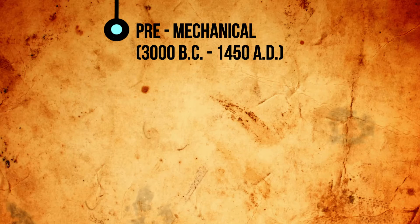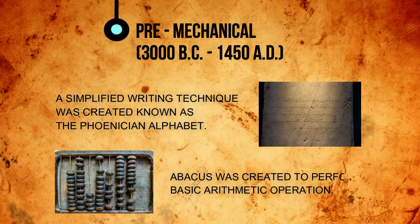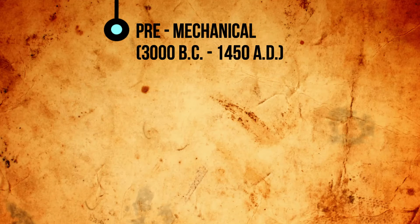Later on, the Phoenician alphabet was created, which is a simplified writing technique that became popular, creating more recorded information. By the creation of the alphabet, the number system was also created. One of the known ancient inventions is the abacus, which was invented to perform basic arithmetic operations.